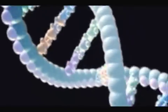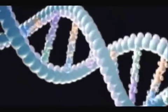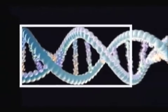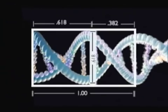The DNA molecule, the code for life, is made up of two intertwining spirals. We find the 0.618 ratio between the helix's width and cycle length.